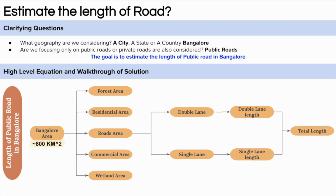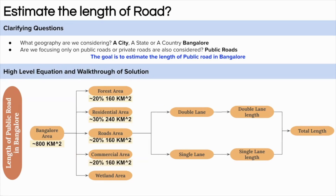Let's start putting in those numbers. The area of Bangalore is around 800 kilometer square. This area is bifurcated into five different areas: 20% is forest or plantation area, that is around 160 km²; 30% belongs to residential area, that is around 240 km²; roads contribute around 20%, that is around 160 km²; commercial area contributes around 20% — there are a lot of tech parks, shopping malls, and cafes — that is around 160 km²; and the wetland area contributes 10%, as there are a lot of lakes in Bangalore, that is around 80 km². Out of the total 160 km² occupied by road, double lane road occupies 70% — around 112 km² — and single lane road occupies 30% — around 48 km².